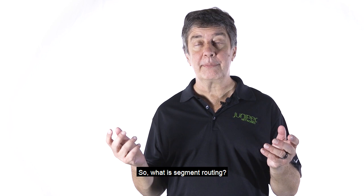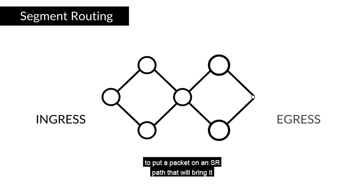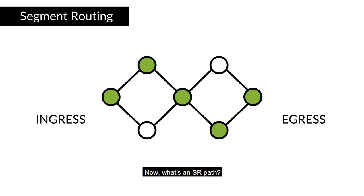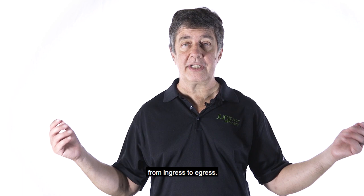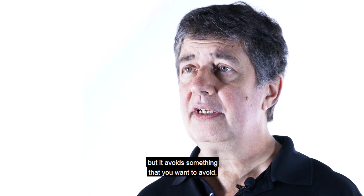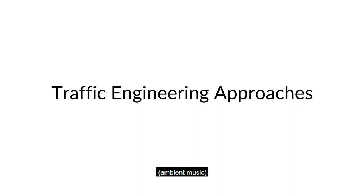What is segment routing? Segment routing is a mechanism that a source node can use to put a packet on an SR path that will bring it from its ingress to its egress. An SR path provides unidirectional connectivity from ingress to egress. That SR path can follow the least cost path from ingress to egress, or it might follow a path that isn't the least cost path but avoids something you want to avoid, like a point of congestion.